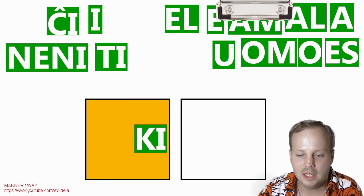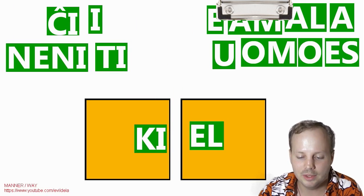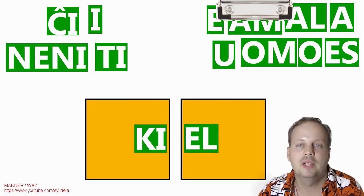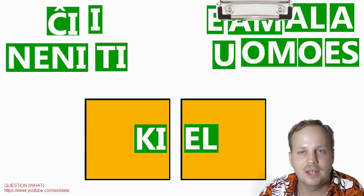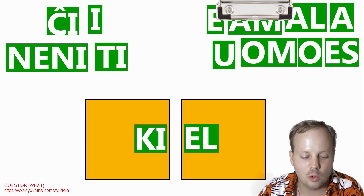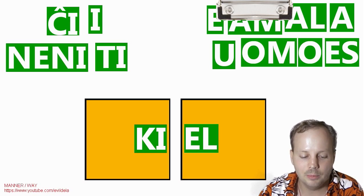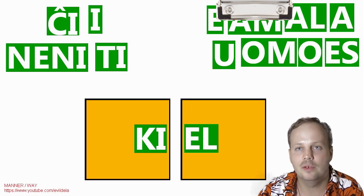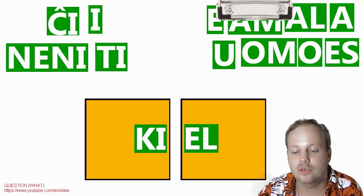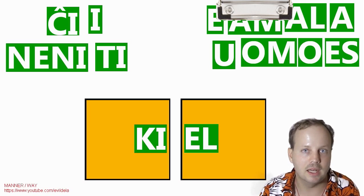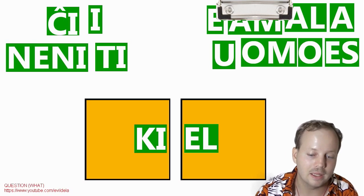So you put the KI here, and then you grab — let's just say — the EL one. That's pronounced as Kiel. And if you hover over it, you'll see down the bottom left-hand corner there's text, and it says 'question, what?' And then you go over the EL part and it says 'manner, way.' So if you put that together, it's 'what manner, what way.' Kiel means how — in what manner, in what way.